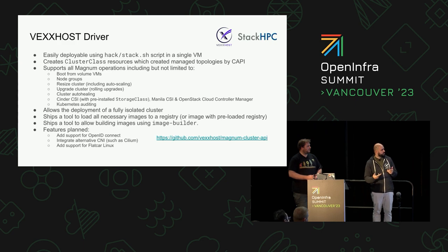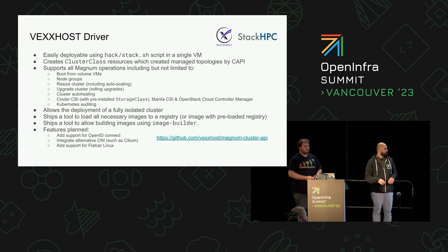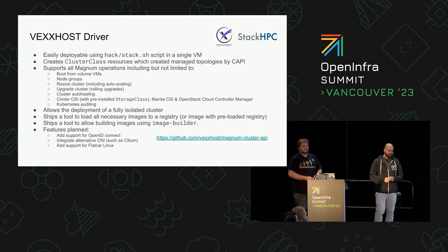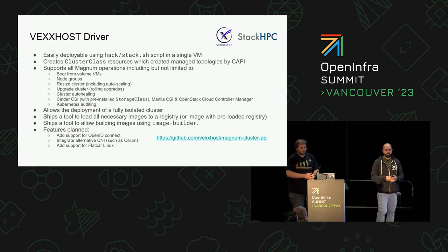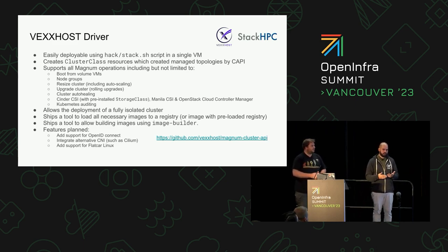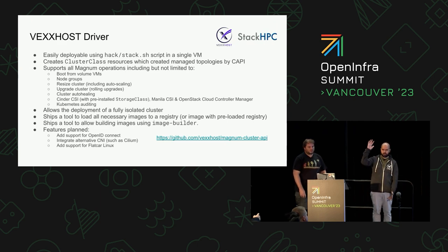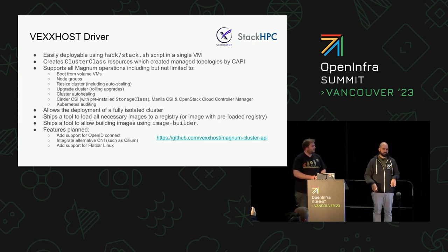We have a couple of other tools. One ships all necessary images to build a cluster to a registry — rather than playing whack-a-mole figuring out what images you need, you just run the tool, point it to your registry, and it uses crane to push everything up. We also have a preloaded image option. And we have a tool for building images: the images used by cluster API are upstream images from a Kubernetes project called Image Builder. Rather than having a long readme, we have a small wrapper script — you give it the Kubernetes version you want, it checks out the repo and starts the Packer build process for you.